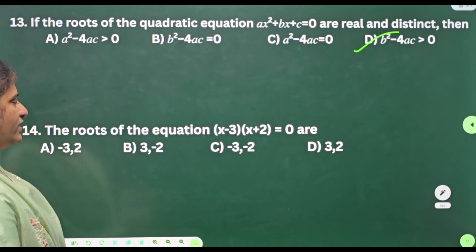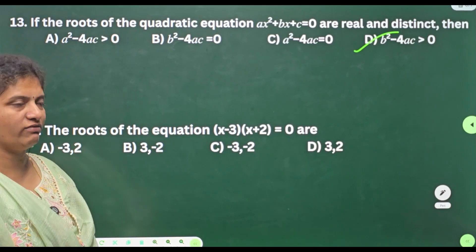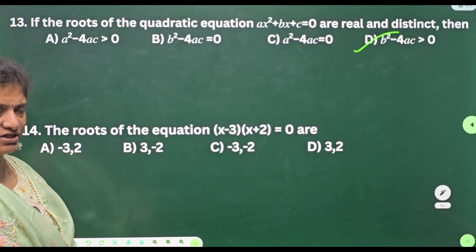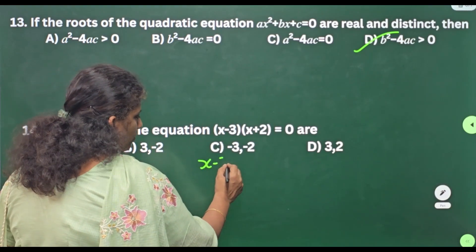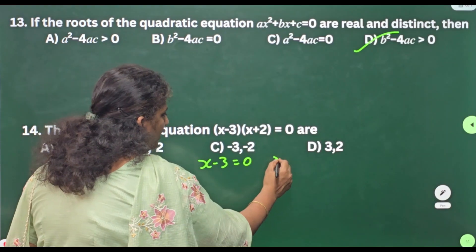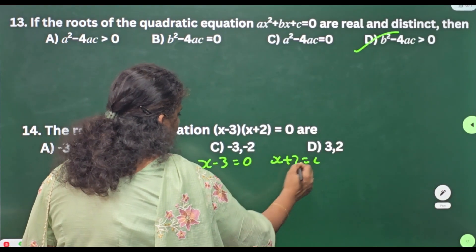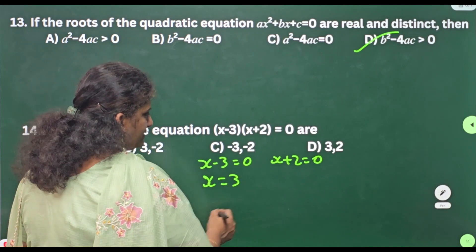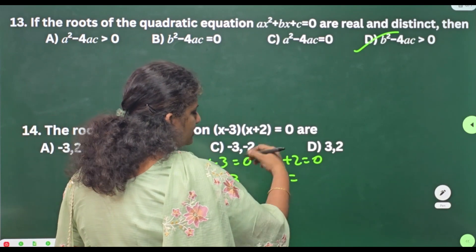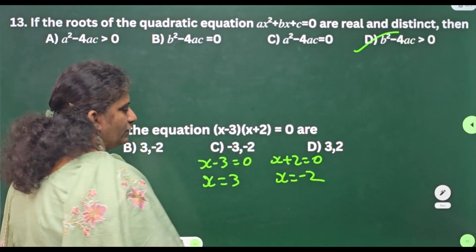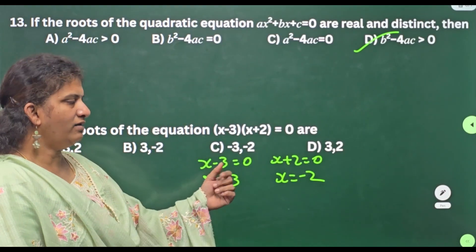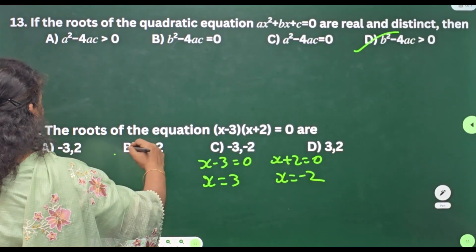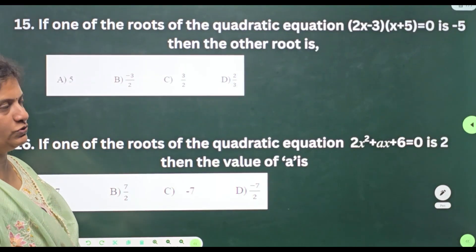Fourteenth one: the roots of the equation (x − 3)(x + 2) = 0 are — what are the roots? If you equate to 0: x − 3 = 0 gives x = 3, and x + 2 = 0 gives x = −2. Therefore, what are the roots? 3 and −2. Where is your answer? Option B: 3, −2.